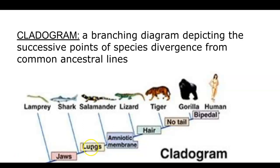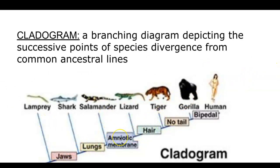Here you can see a lineage: we have a lamprey, then jaws become a characteristic that's present, so we have sharks. Continuing down, we have the development of lungs, so we have the salamander. An amniotic membrane brings in reptiles — salamanders are amphibians, lizards are reptiles. Then we have the trait of hair, so we're looking at mammals: tiger, gorilla. No tail indicates gorilla and human. Bipedal — human walking on two feet — shows the ancestry of these animals through this cladogram.